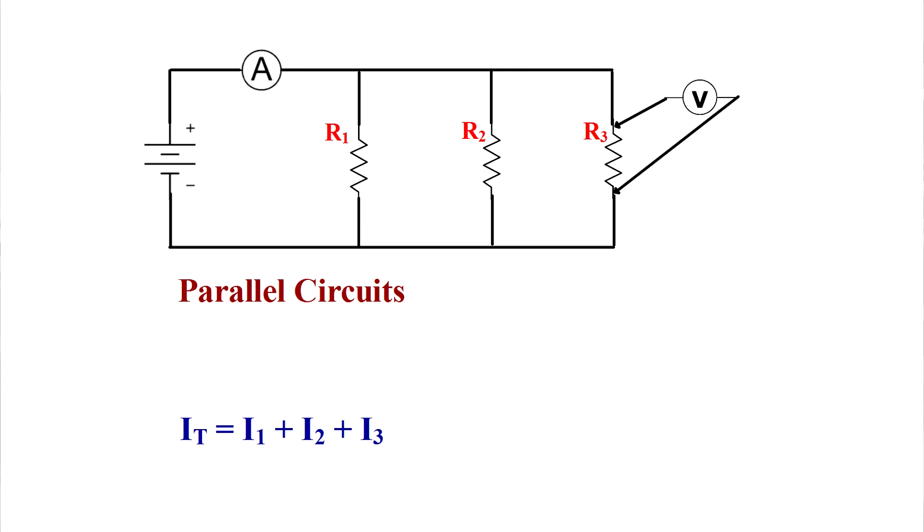But in a parallel circuit, if you add up the currents in each branch, you'll get the total current coming out of the battery.